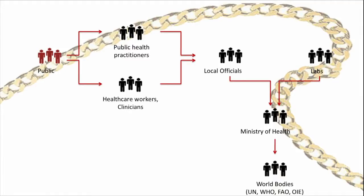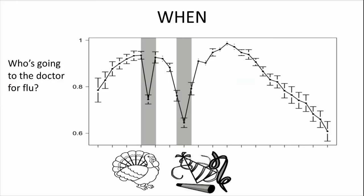The way we get data today in public health is very chain of command. There are many steps between when the public reports that they're sick up to when it comes to bodies that are actionable, like the WHO or the UN. There are a lot of issues with this chain of command structure — we lose out on knowing when things happen. This is the number of people going in to see their doctor for things like flu in the United States, and that increases in the fall. But around times like Thanksgiving and New Year's, people don't go into the doctor — they're busy doing other things. So we don't know who's sick.